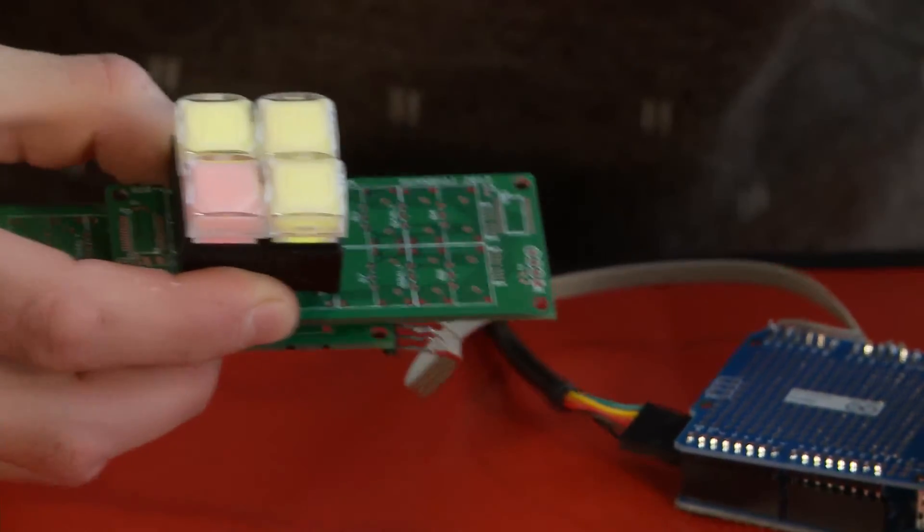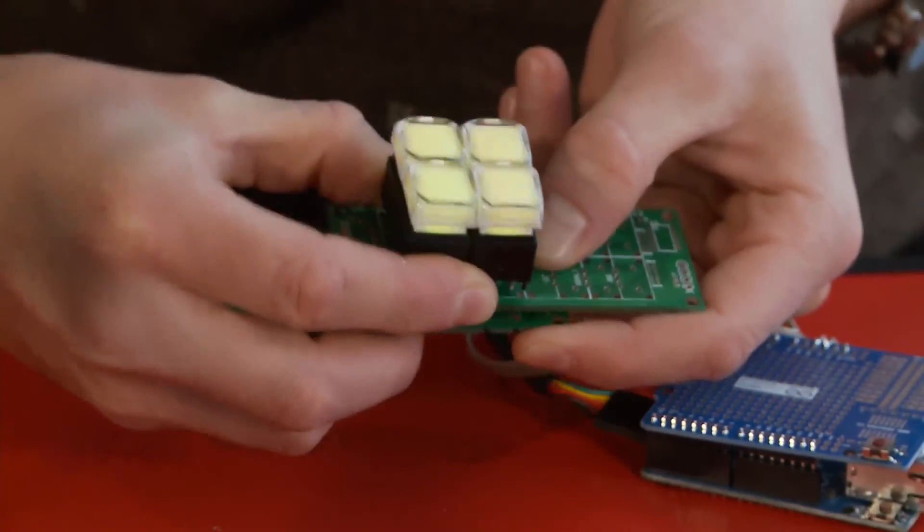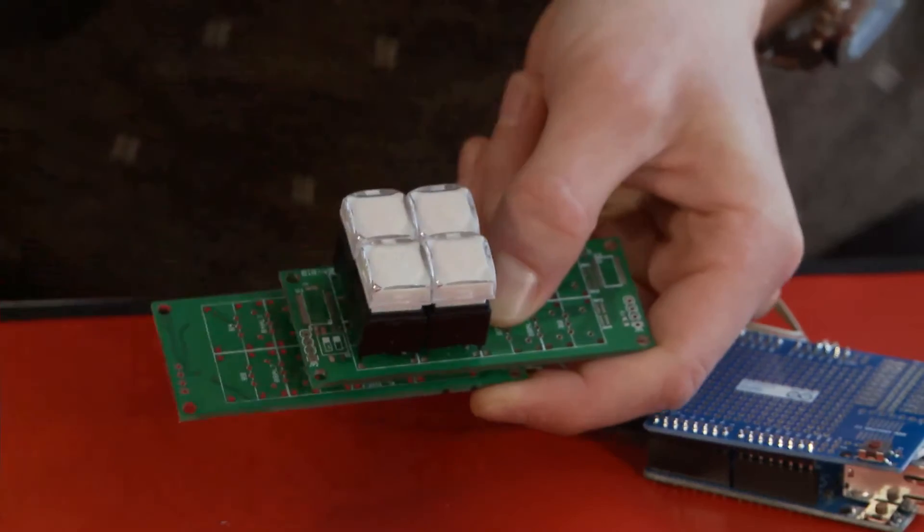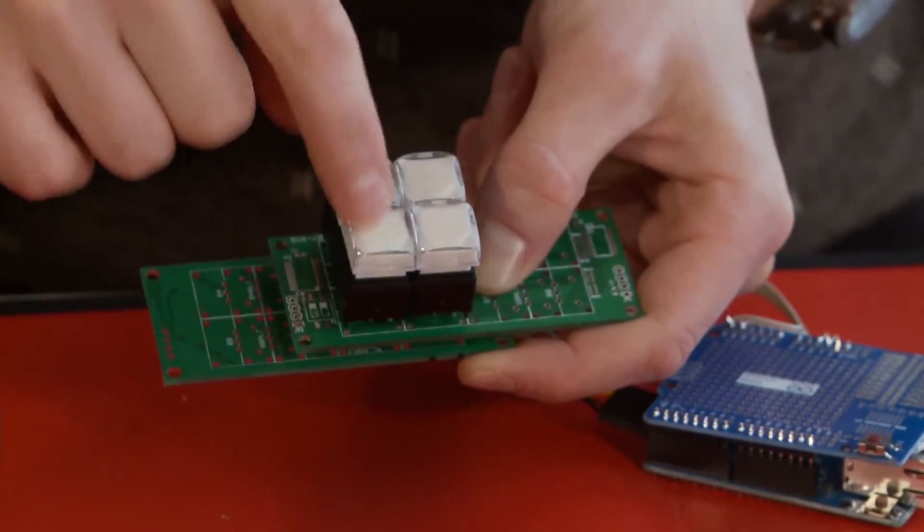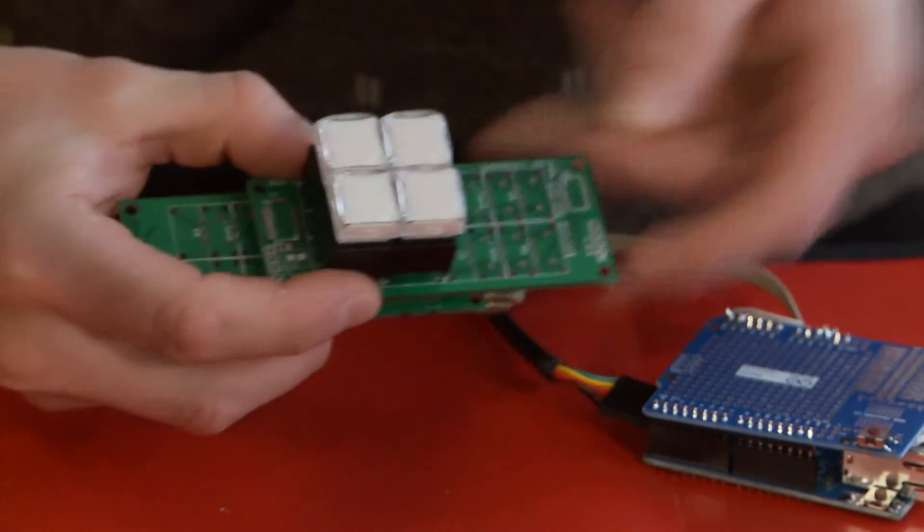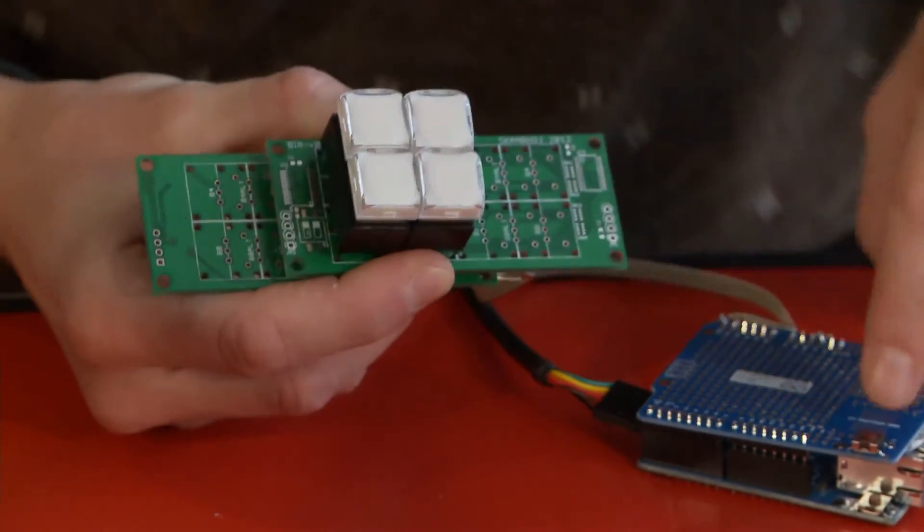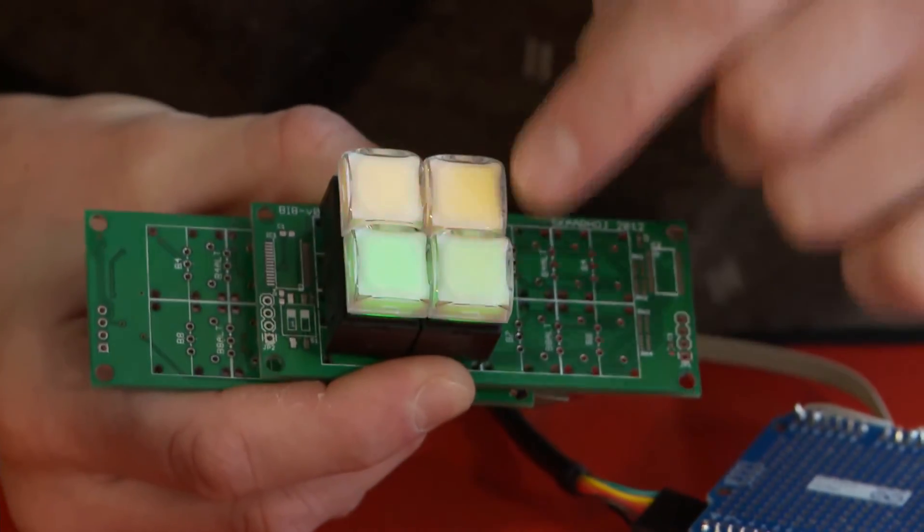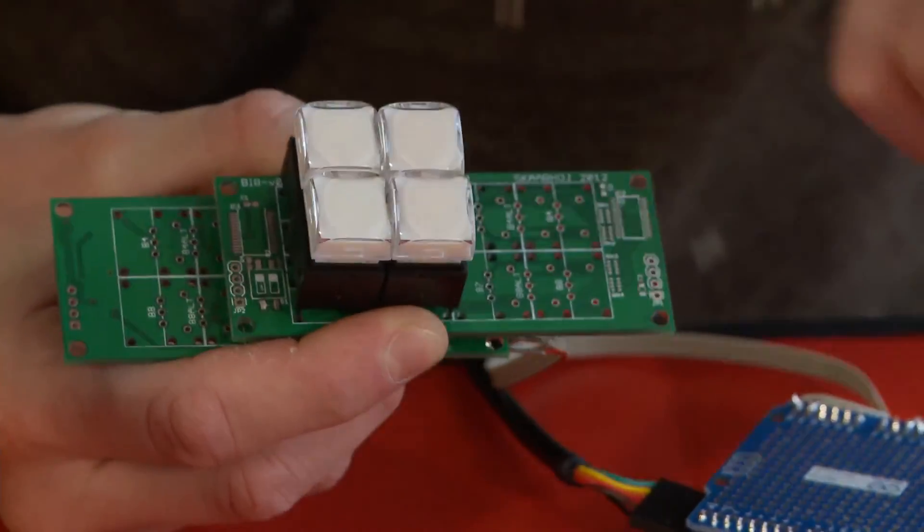Then I press the reset button and you can see all the blinking sequence of the buttons. It is performed by the software and you can see it once again. I press the reset button and you can see how they blink with all of the colors that are necessary.